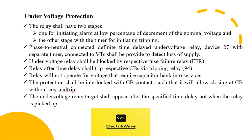The under voltage protection is to be provided in the scheme of protection with the fundamental voltage sensor with a timer with adjustable time settings. The relay shall have two stages: one for initiating alarm at a low percentage of decrement of the nominal voltage, and the other stage with the timer for initiating tripping. A neutral connected definite time delayed under voltage relay, device 27 with separate timer connected to voltage transformer, shall be provided to detect loss of supply. The under voltage relay shall be blocked by the respective fuse failure relay.